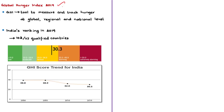The Global Hunger Index or GHI is a tool designed to comprehensively measure and track hunger at global, regional and national levels. GHI scores are calculated every year to assess progress and setbacks in combating hunger. This index raises awareness and understanding of the struggle against hunger and provides a way to compare hunger levels between countries and regions. It calls attention to areas where hunger levels are highest and additional efforts are required. In the 2019 Global Hunger Index, India has been ranked 102nd out of 117 qualified countries with a score of 30.3, indicating India suffers from a serious level of hunger.